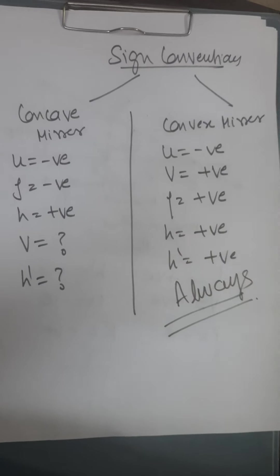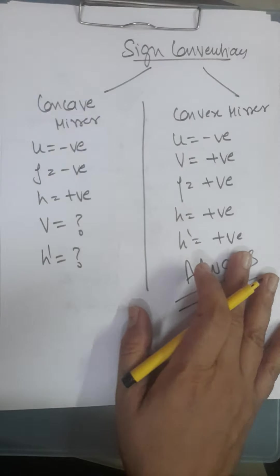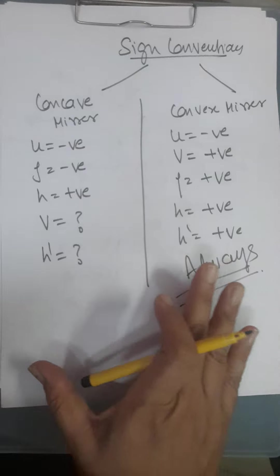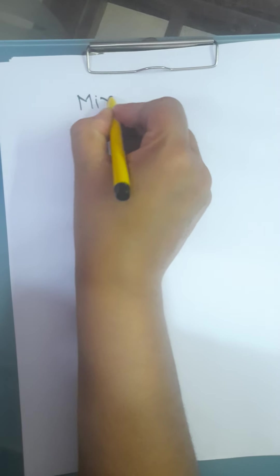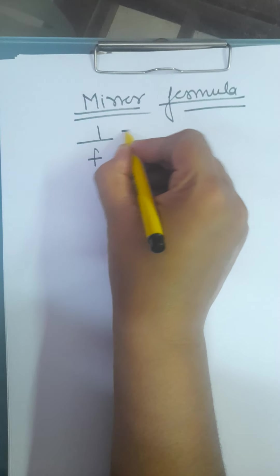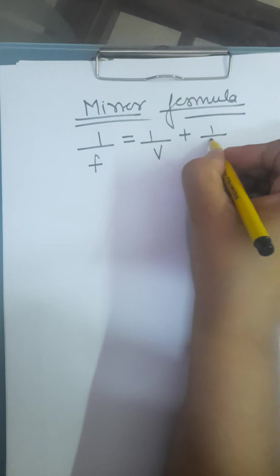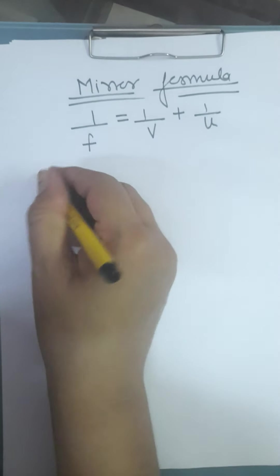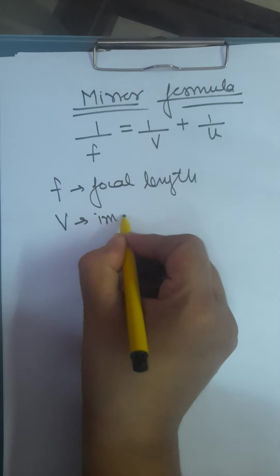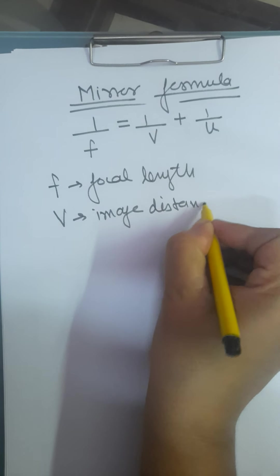For those children who find sign conventions difficult, remember this rule always — left is negative, right is positive. I will also send these conventions to you in notes so you can write them in your copy. Now children, I start with the mirror formula. This is very important — it comes in the exam for three marks. The mirror formula is: 1/f = 1/v + 1/u, where F is focal length, V is image distance, and U is object distance.